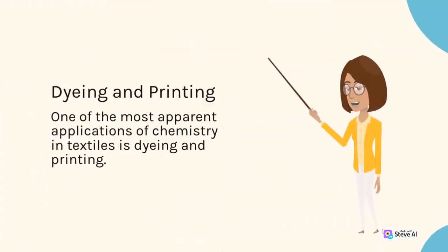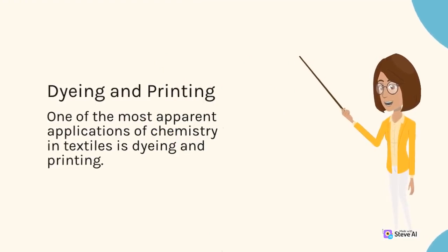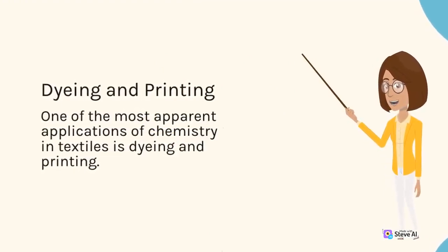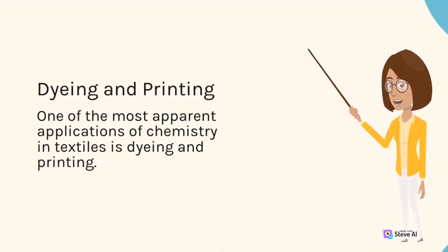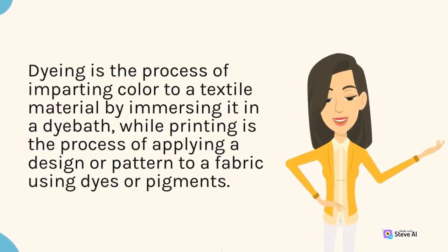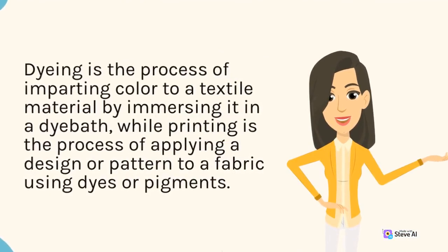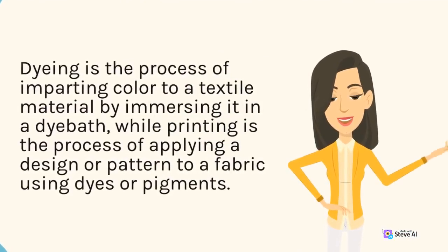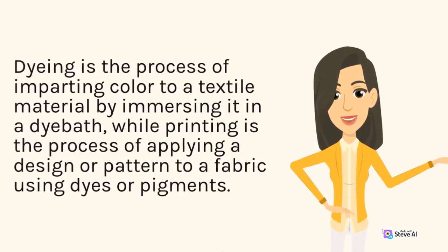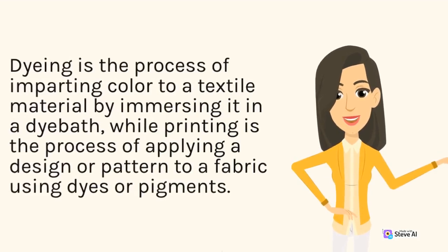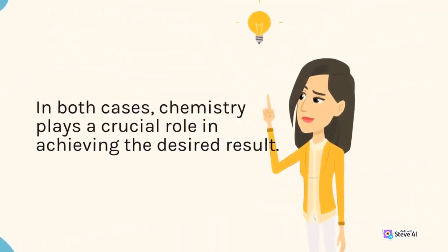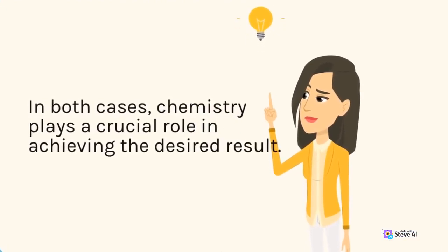Dyeing and Printing: One of the most apparent applications of chemistry in textiles is dyeing and printing. Dyeing is the process of imparting color to a textile material by immersing it in a dye bath, while printing is the process of applying a design or pattern to a fabric using dyes or pigments. In both cases, chemistry plays a crucial role in achieving the desired result.